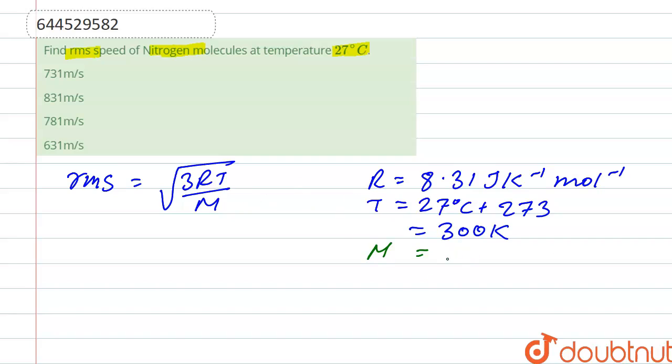The molecular mass of nitrogen is 14 grams, but we convert it to kilograms by multiplying by 10 to the power minus 3, so it becomes kg per mole. Now we substitute the values: RMS equals square root of (3 × 8.31 × 300 divided by